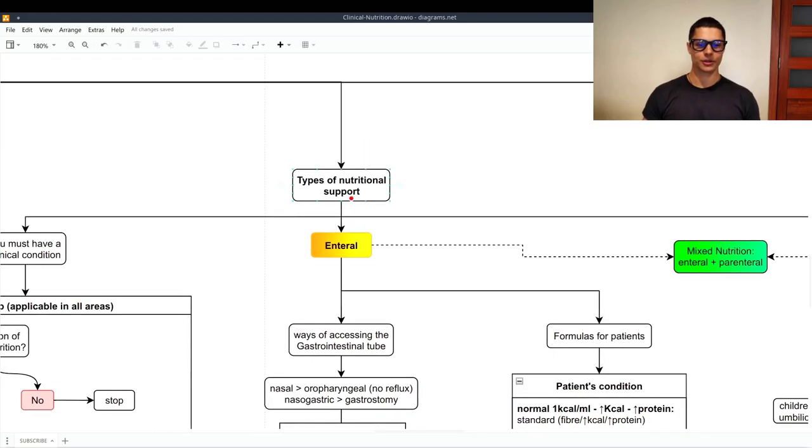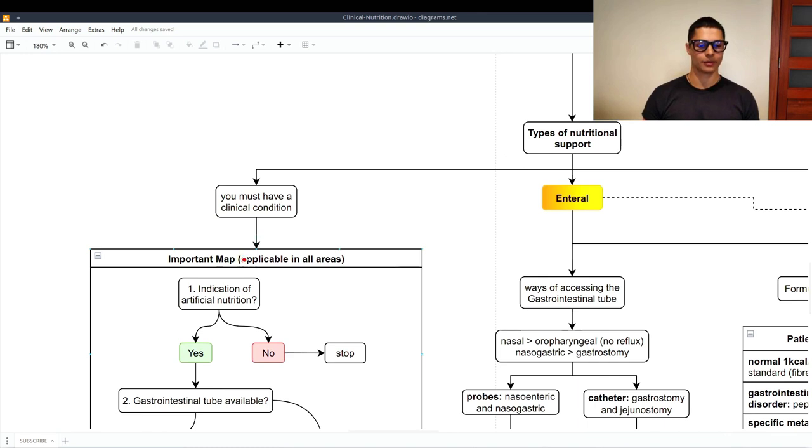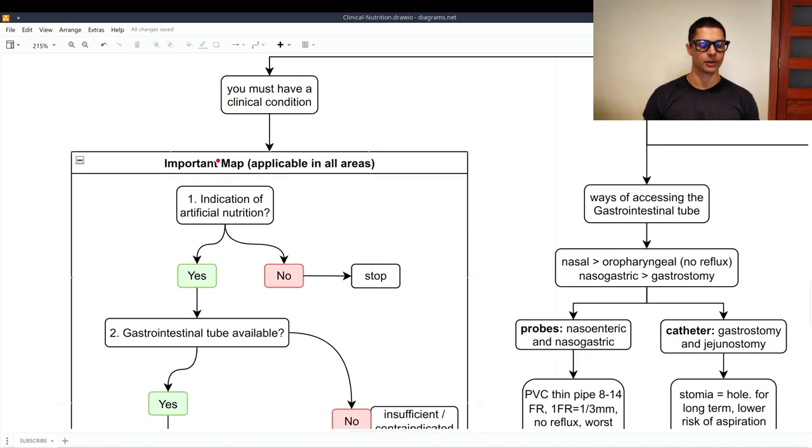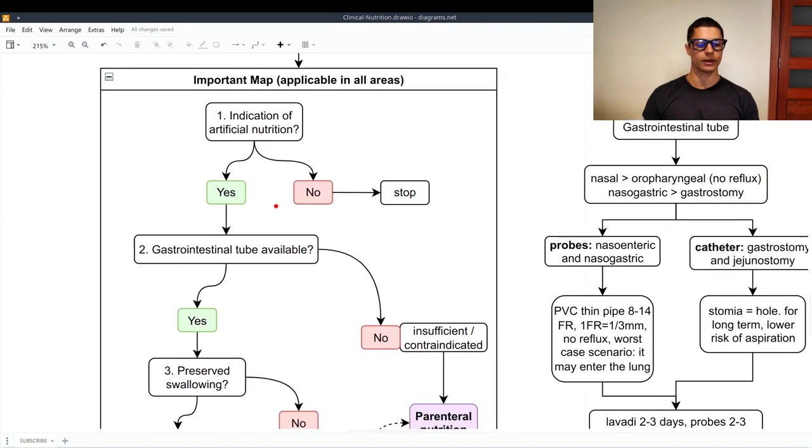Okay, so types of nutritional support, we have an important map here. To access a nutritional support from a clinic you must have a clinical condition. Once you have that we can follow this important map which is applicable in all areas. So the first thing we do is to ask if there is an indication of artificial nutrition. If there isn't then we stop here. If there is an indication we go on.